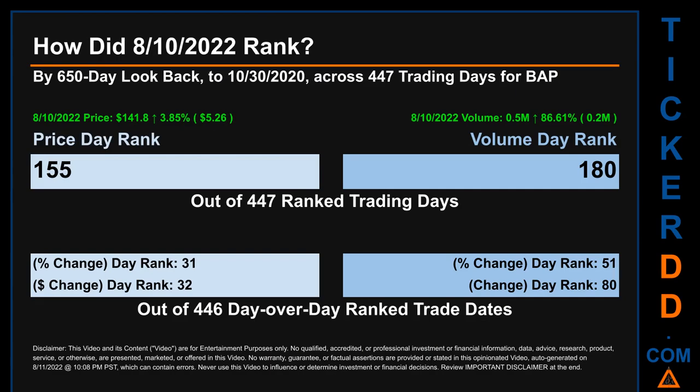Hello, my name is Magnus. How did the 10th of August 2022 rank for VAP? By 650 calendar day look back to October 30, 2020, across 447 trading days, the 10th of August 2022 price ranked 155th while its volume ranked 180th. Each of the 447 trading days were ranked amongst themselves by highest end-of-day price and volume, with a rank of 1 being the highest and 447 being the lowest-ranked day. The price's day-over-day percentage change, jumping 3.85% on the 10th of August 2022, had a day rank of 31, while its dollar difference of $5.26 had a rank of 32 when compared day-over-day across 446 trading days. Volume's percentage change and difference were ranked respectively at 51 and 80.